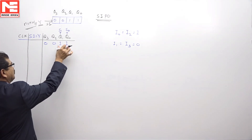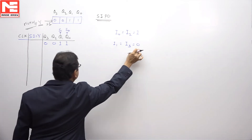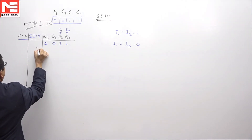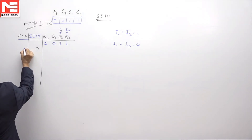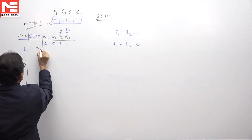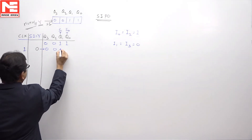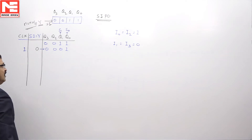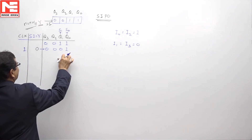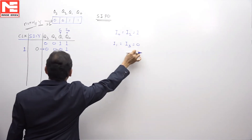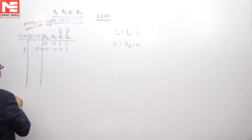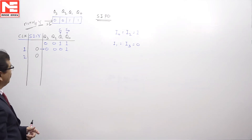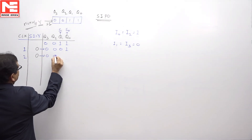Before the first clock pulse, S1 and S0 select inputs of the multiplexer are 1 and 1, so line 3 is selected. Line 3 is connected to 0, hence the serial input is 0. After the first clock pulse, the data in the register shifts 1 bit to the right. Now the select inputs S1, S0 are 0 and 1, so line 1 is selected. Line 1 is connected to 0, hence the serial input before the second clock pulse is 0.